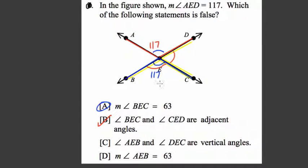AEB and DEC are vertical angles. AEB, well, that is this angle right here. And DEC is right here. Those are vertical angles.